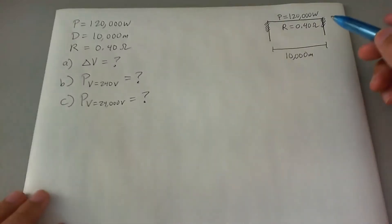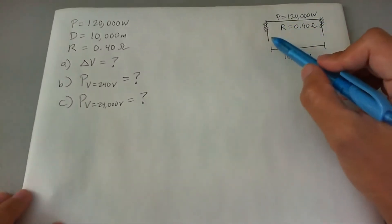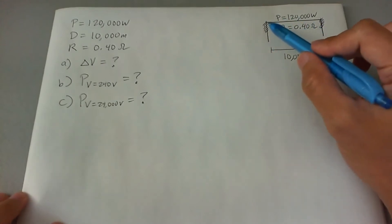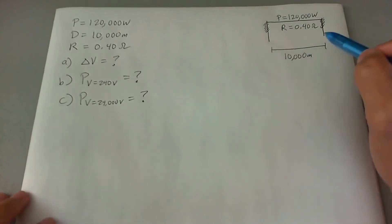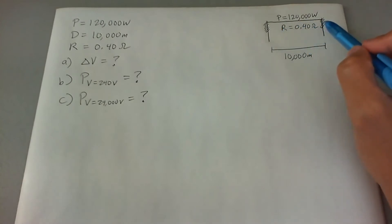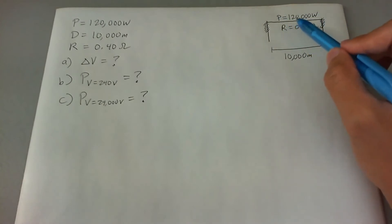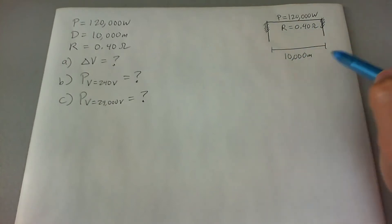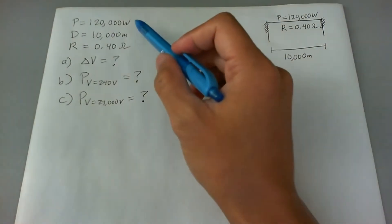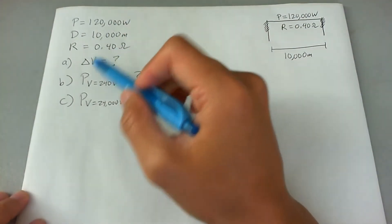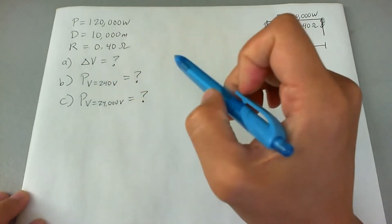This problem is drawn here. We have two sides of a wire which have a potential difference transmitting current through the wire. There's a power loss given here and the resistance of the wires given here. The distance between the two points of the wires is given here as well. I went ahead and wrote that down on the left side along with the three questions that were asked.